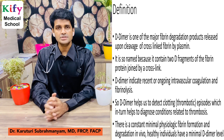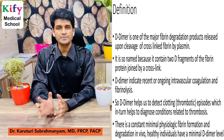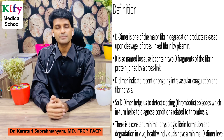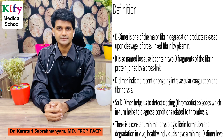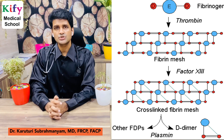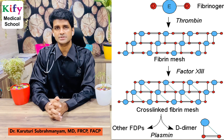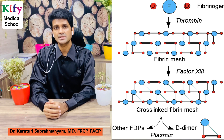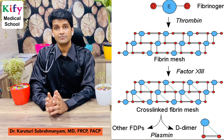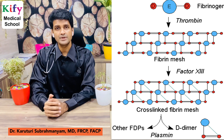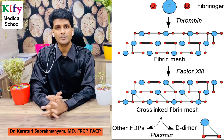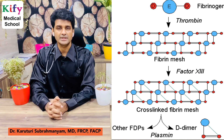There is a constant minimal fibrin formation and degradation occurring, which is why healthy people have minimal D-Dimer levels. As shown in the picture, when there is tissue damage, the hemostatic process starts — thrombin converts fibrinogen into fibrin, and factor 13 makes this fibrin into a fibrin mesh, which along with platelets forms a clot to seal the damaged area.